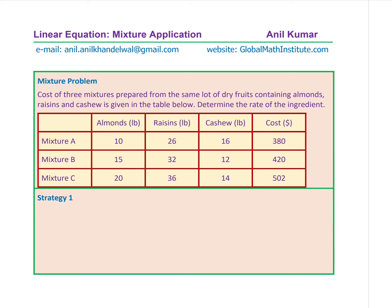I am Anil Kumar, welcome to my series on linear equations. We'll take up a very important question based on applications of mixtures. You can send an email at the address given and check my website for new videos. The question is: the cost of three mixtures prepared from the same lot of dry fruits containing almonds, raisins, and cashews is given in the table below. Determine the rate of the ingredients. We have three mixtures: mixture A, mixture B, and mixture C.